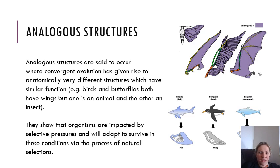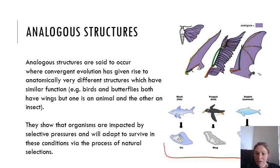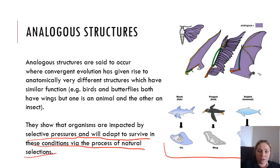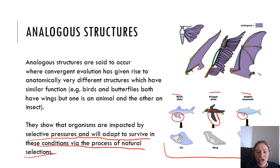Analogous structures are said to arise from convergent evolution. These structures look similar across animals, but haven't emerged from a common ancestor. Rather, they've come about due to changes in environments and animals moving to a more similar environment. They've been impacted by the same selective pressures and adapt to survive via natural selection. For example, a fish, a penguin, and a dolphin all live around the sea and have evolved a wing or flipper structure — but they haven't come from the same ancestor.